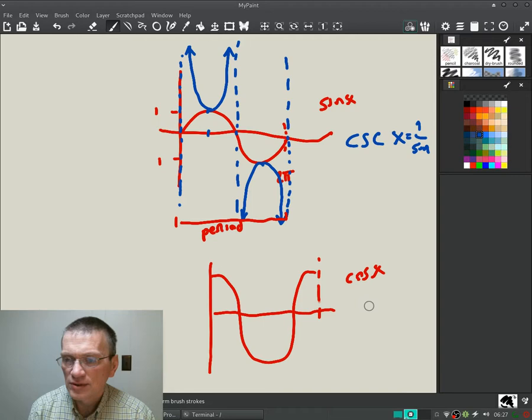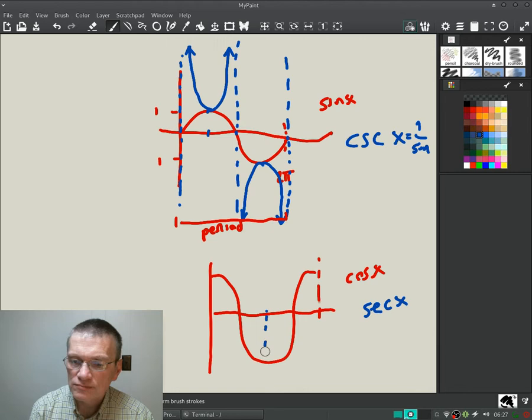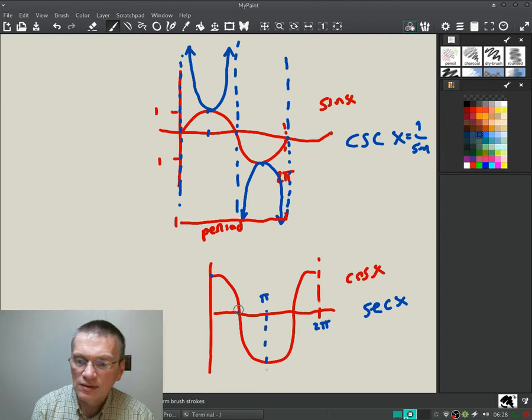Very quickly, let's do secant of x. This is going to be π, this is going to be 2π. Similarly, where sine equals one, cosine equals one. Secant equals one over one, which is also one. Where cosine goes to zero, there is going to be an asymptote, and secant goes to either plus or minus infinity. And here they are. They go up like this and down like that.